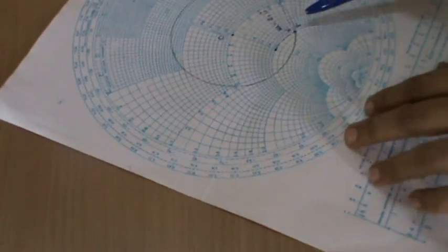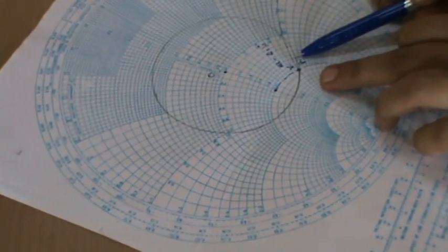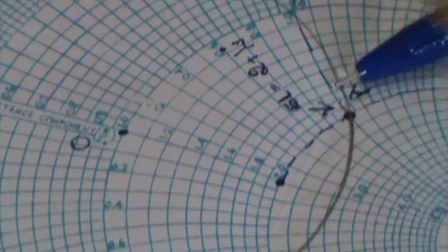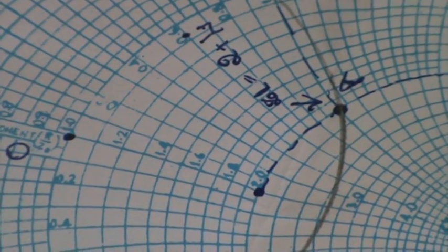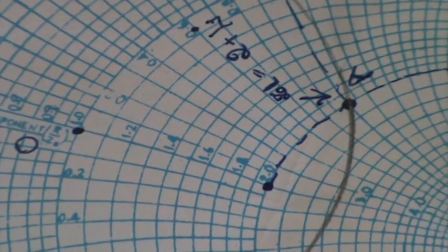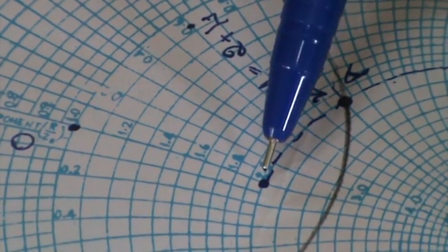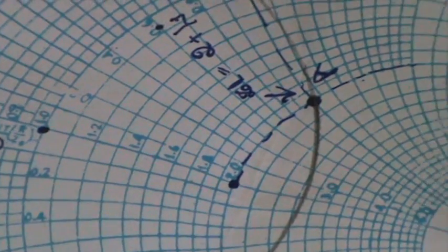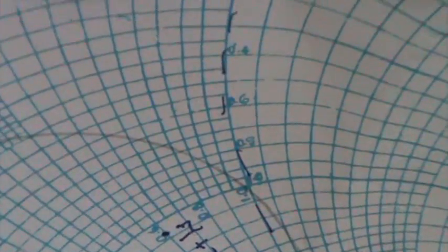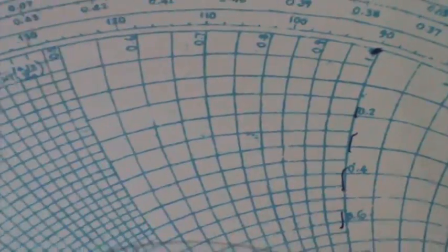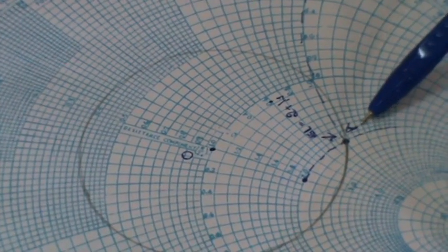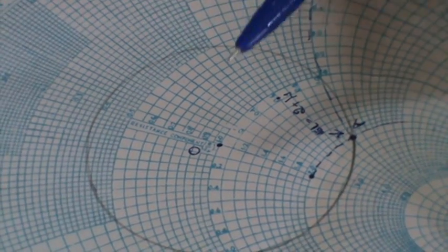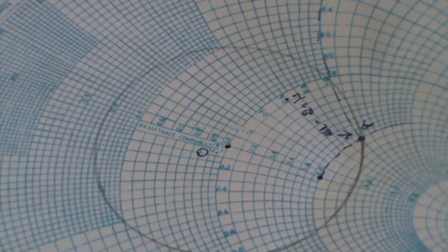I have already marked the normalized impedance. Let me explain it. Here R plus jX is 2 plus j1, which I'm marking 2 on the main line and 1 on the positive reactance component. We need to locate the normalized impedance at this point. Let me mark it as A and the center as O.